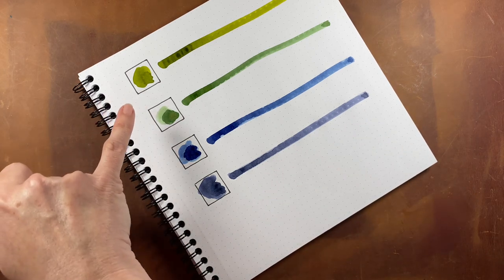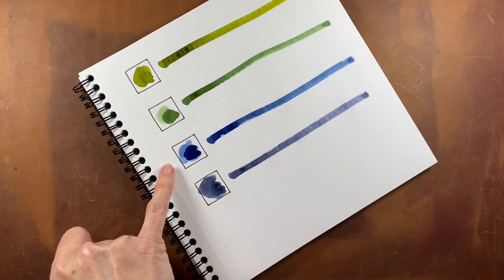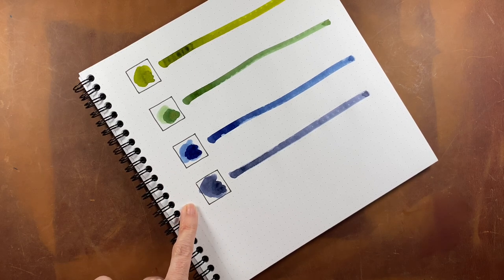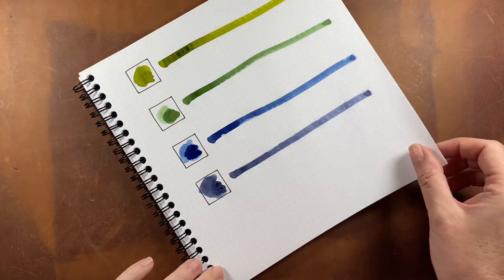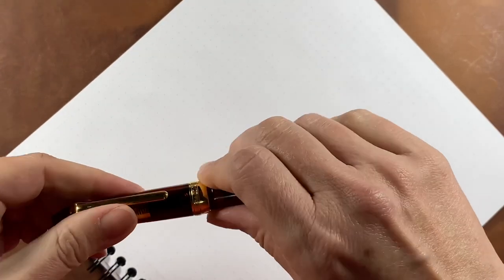So chartreuse, avocado, gray seas, and summer storm. Let's get into the writing samples of each. I'm going to try to zoom you in just a bit.